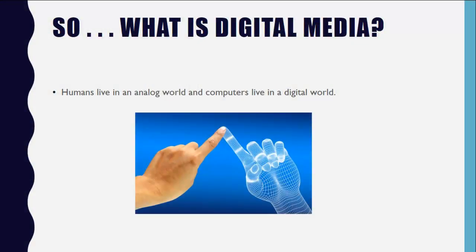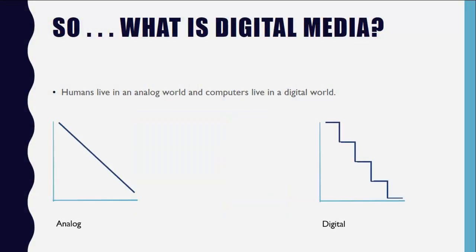Humans live in an analogue world and computers live in a digital world. In the analogue world, the sounds we hear and the letters we read are analogue data. On the other hand, digital data uses exact quantity. Since computers are only built with on and off switches, it uses binary data with two digits, zero and one.